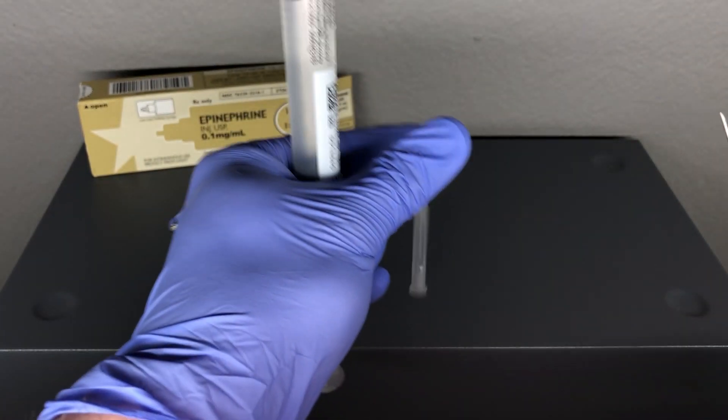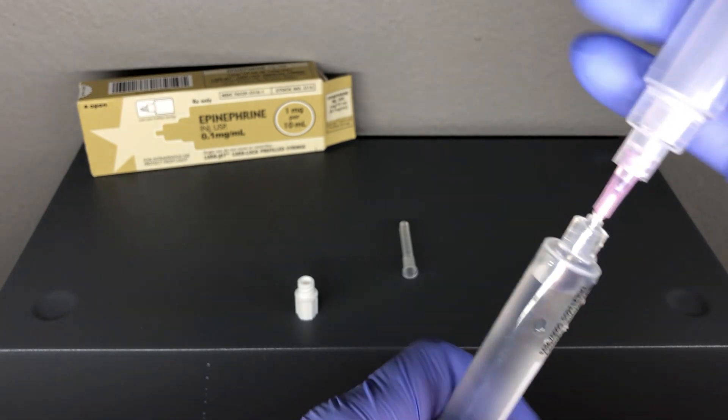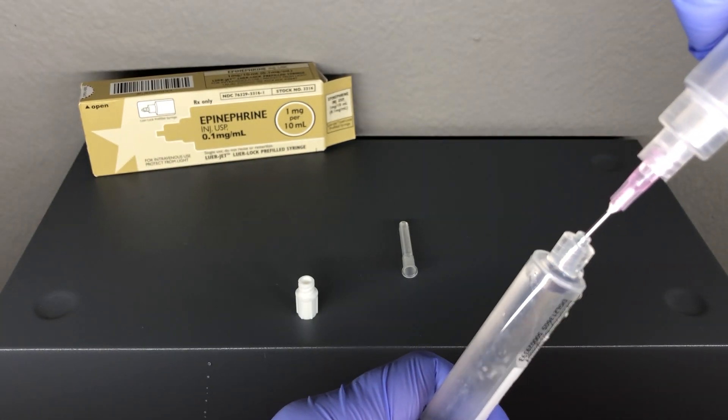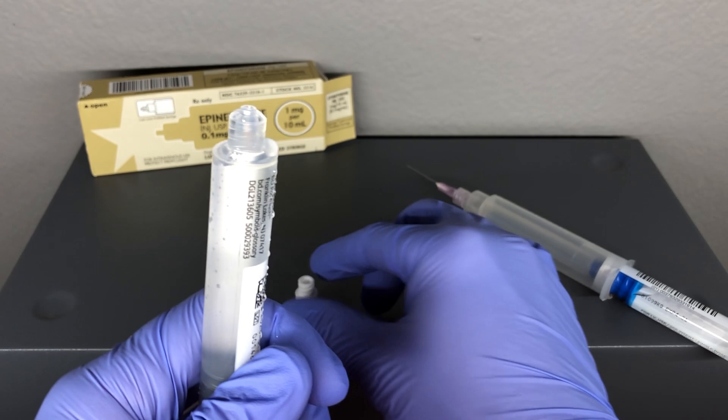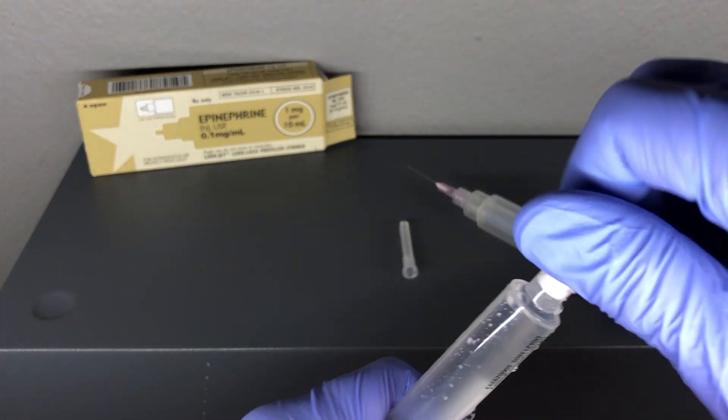Now squirt one milliliter of epinephrine into the flush. Recap and shake vigorously. Then label the syringe, making sure you note the concentration.